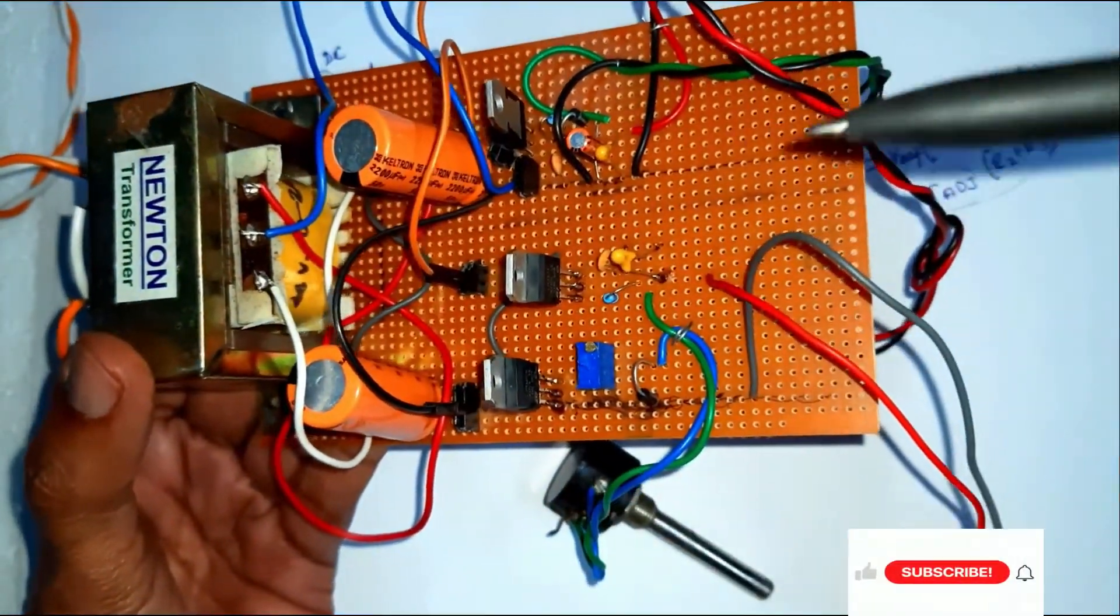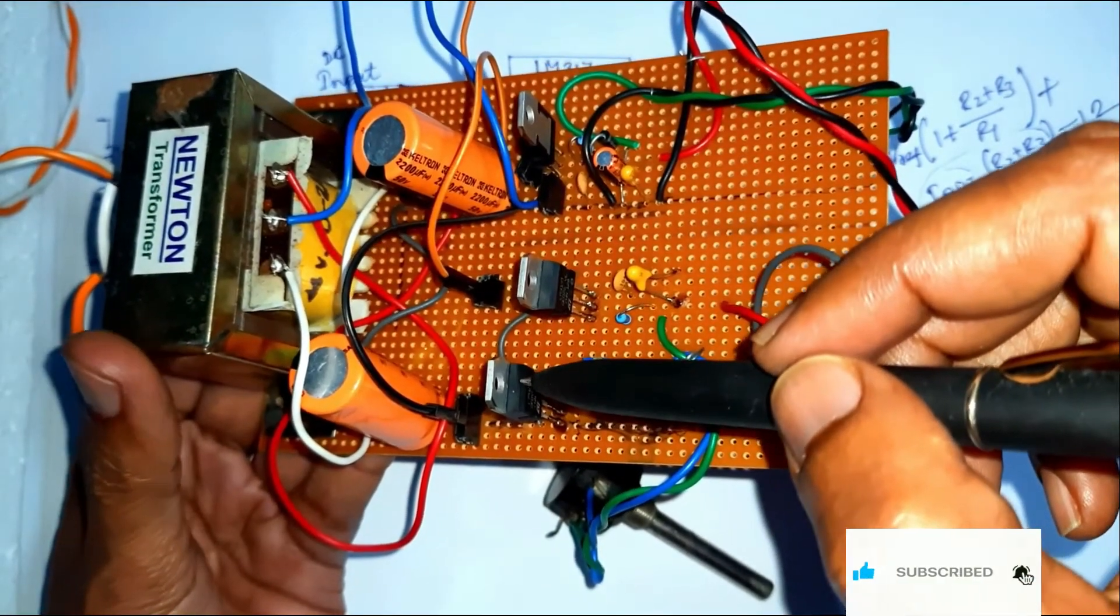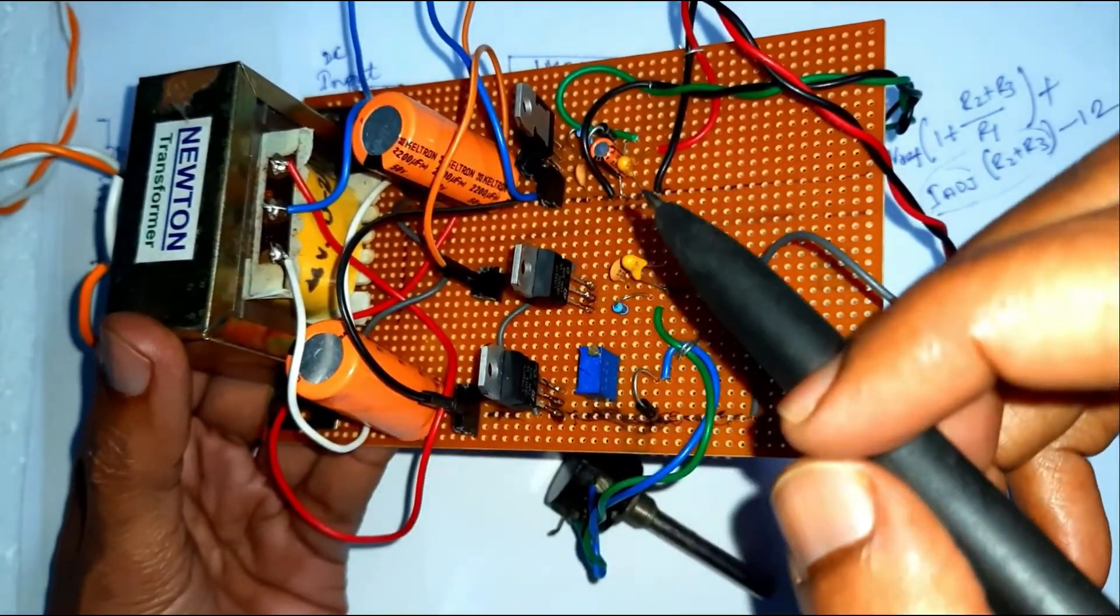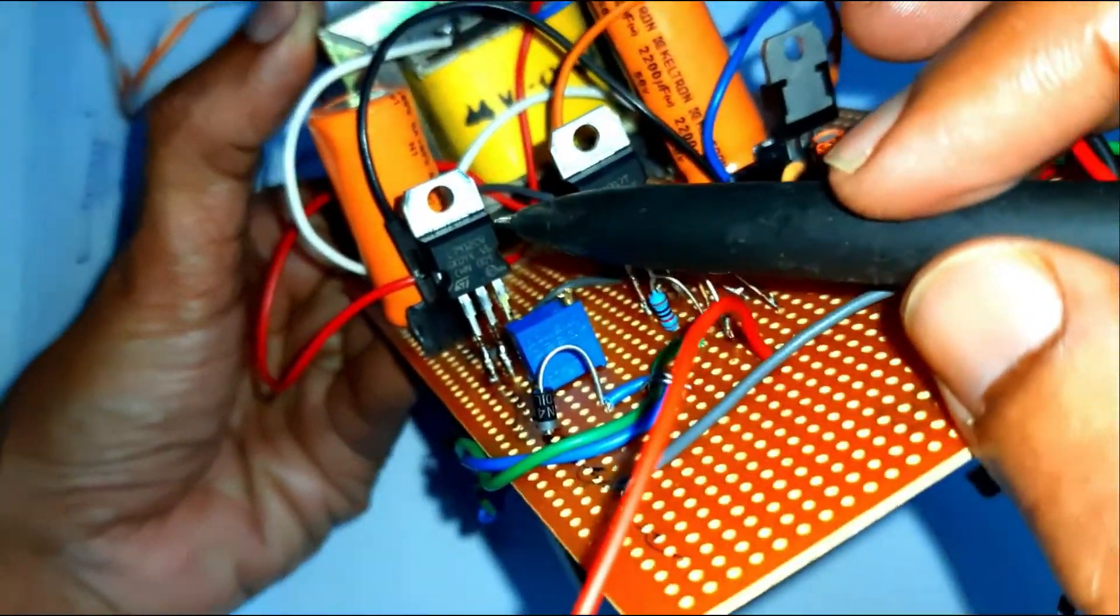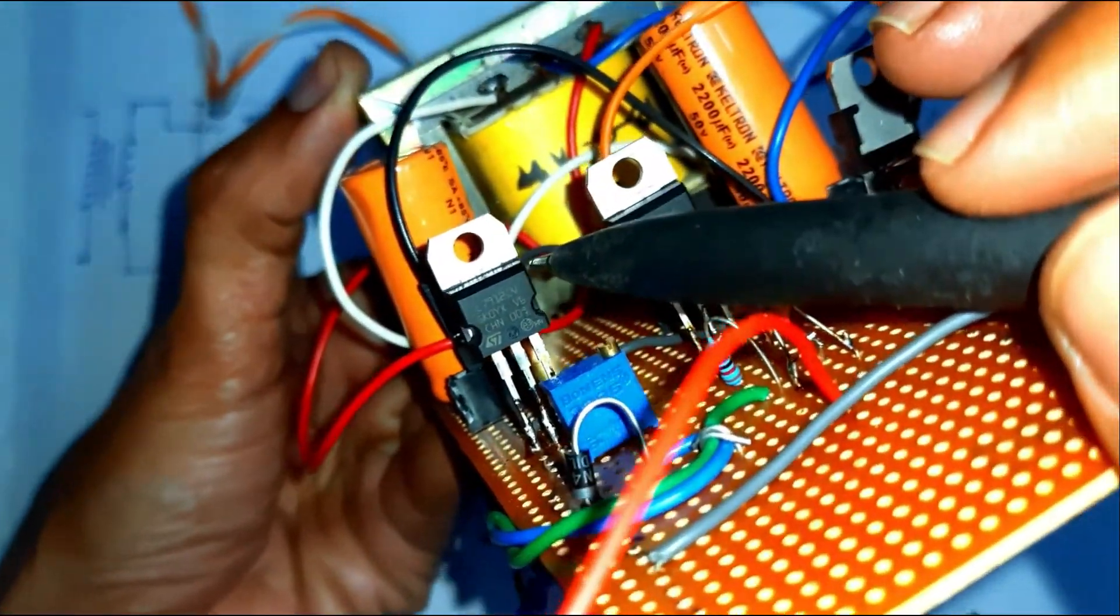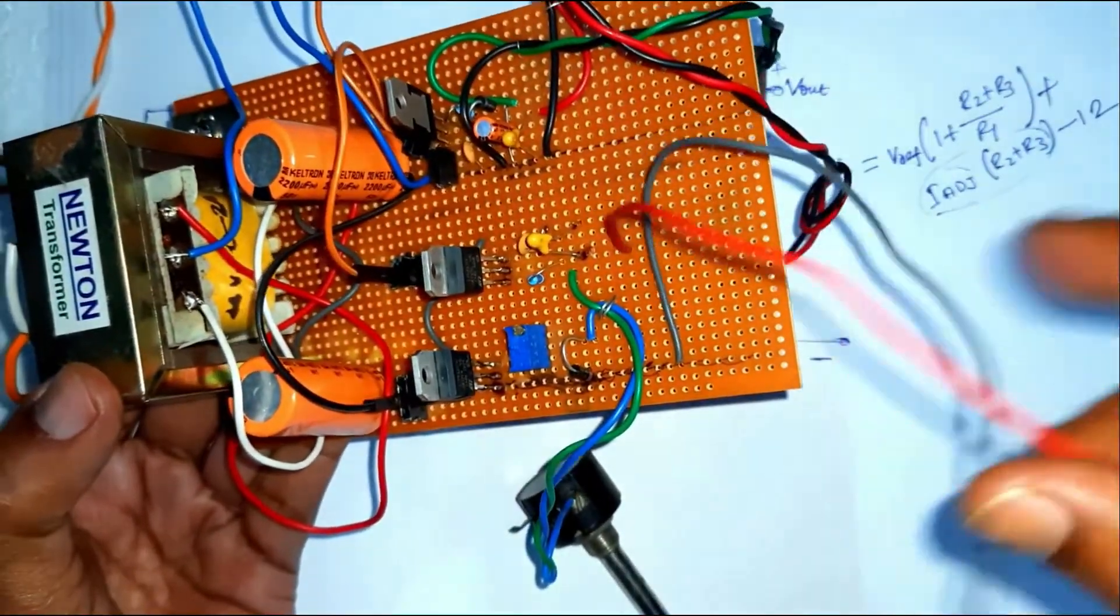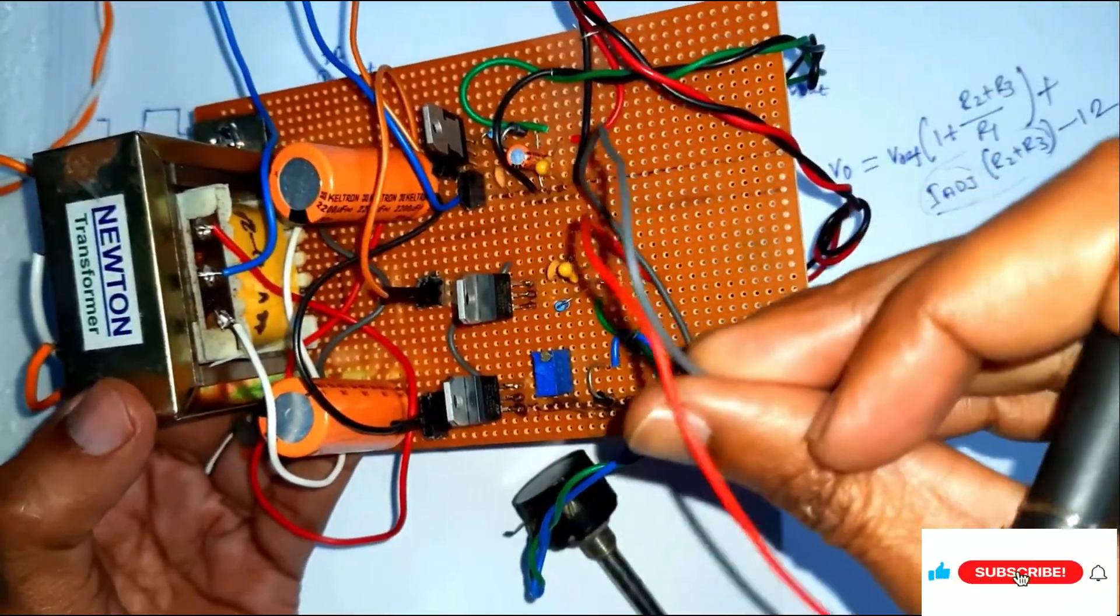And here, for getting minus 12 volt input voltage, we have used regulator IC 7912. And this is the output terminal, the positive terminal and this is the negative terminal.